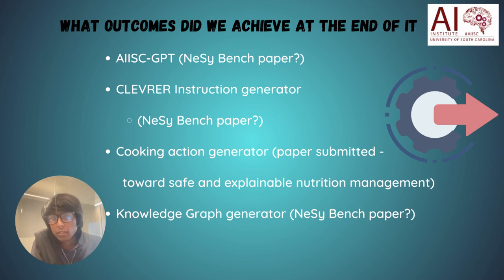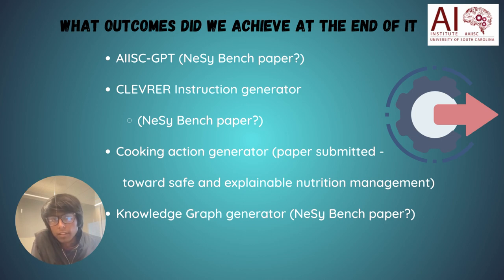The third outcome was a system to generate single-arity functional abstractions — the third level of complexity — from English language descriptions. This software and the methods used have been submitted to a conference. Lastly, we are trying to compile all of these learnings into a single paper to submit as a consolidated neuro-symbolic benchmark paper.